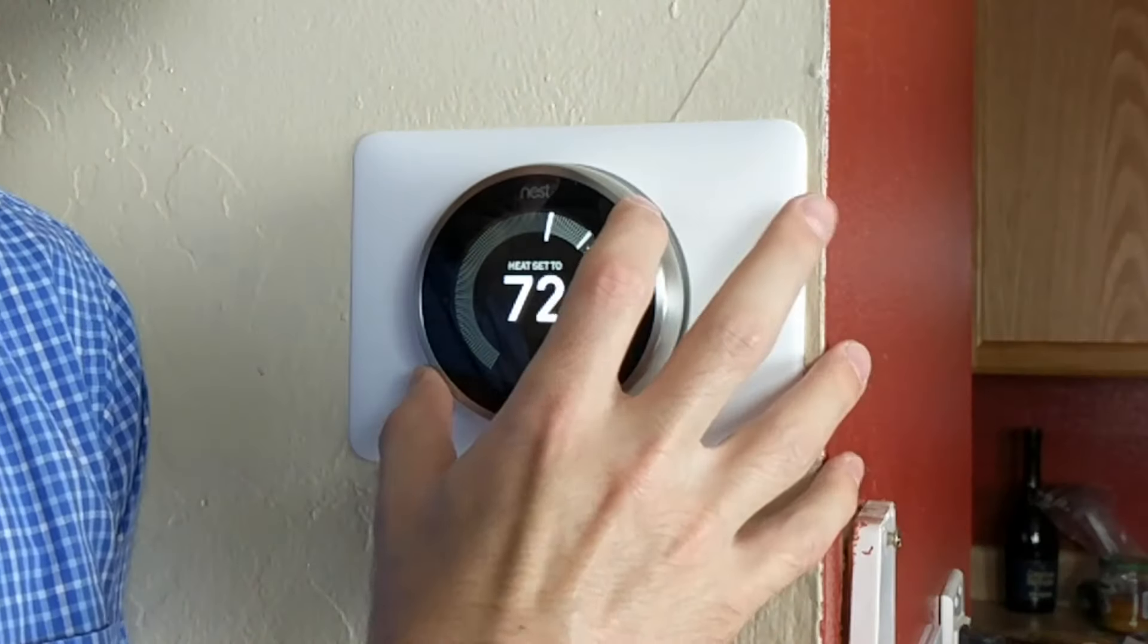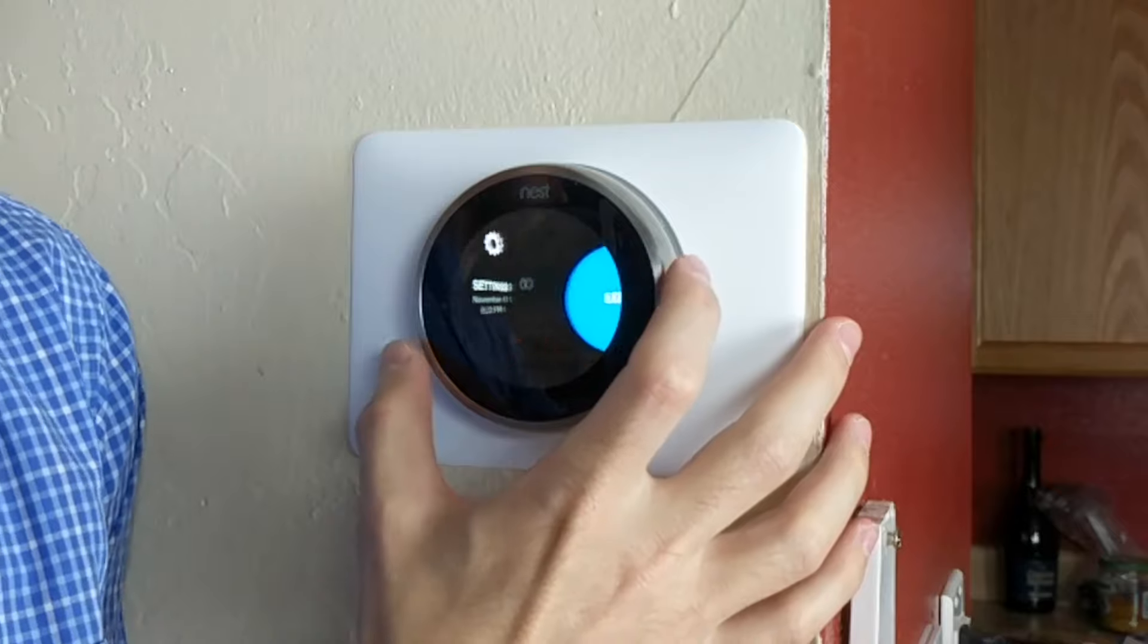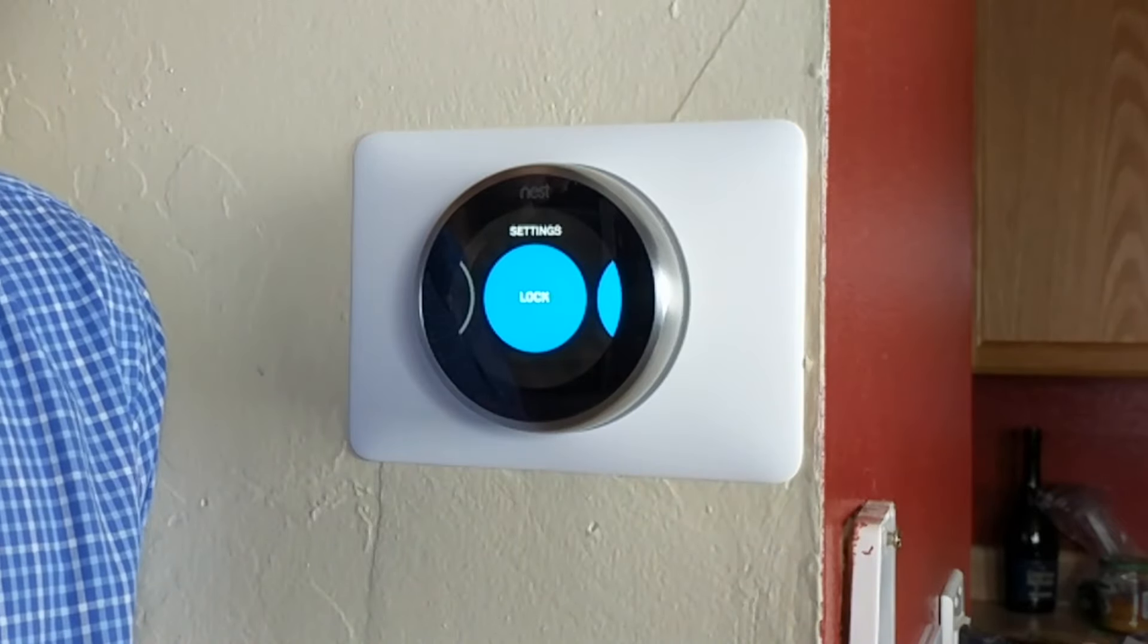Changing the basic settings in the Nest thermostat is pretty easy to do as well. Now we're not going to go through every setting on the thermostat, but we encourage you to do so to select the right features and settings that you want. To access the settings menu, simply press in and then scroll around to the little gear icon which is settings. Here's a quick rundown of the main settings.